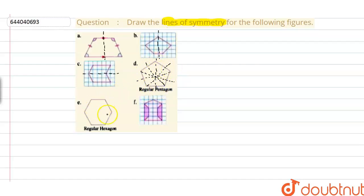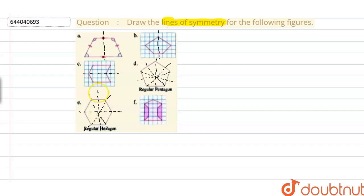Now let us talk about a regular hexagon. In a regular hexagon, all the sides are equal in length. Clearly, all the lines passing through the vertices are going to act as lines of symmetry. So this is a line of symmetry, this is also a line of symmetry, and this is also a line of symmetry. The other lines of symmetry are: this line also divides the figure into equal halves, similarly this line divides the regular hexagon into equal halves, and this last line also divides the regular hexagon into equal halves.